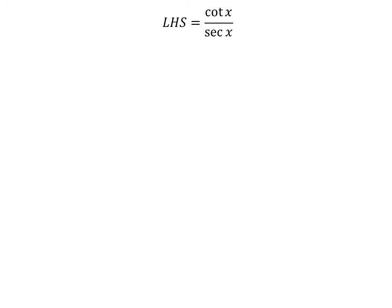Let us start from the left hand side of the identity. Left hand side of the identity is equal to cotangent of x upon secant of x. We can rewrite the above statement as left hand side of the identity is equal to 1 upon secant of x times cotangent of x.